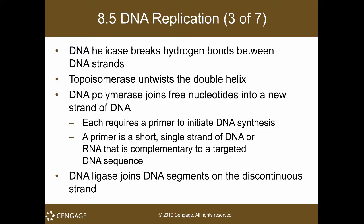Remember, the order of the bases is what encodes the information. Since it's a double helix structure, when the DNA strands separate, it produces a tension or strain in the strand that is unwound, because it's twisted. So you have topoisomerases to untwist your double helix.